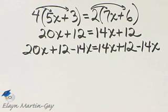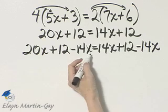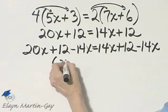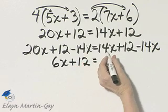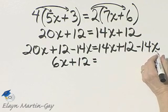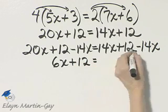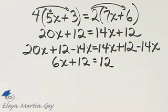And now let's see what we have. On the left side, 20x minus 14x, that is 6x. I still have plus 12, is equal to 14x minus 14x, that's 0. I still have 12 though. Now notice I have 6x plus 12 is equal to 12.